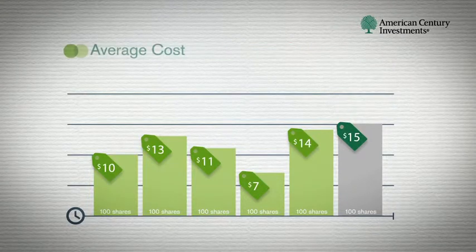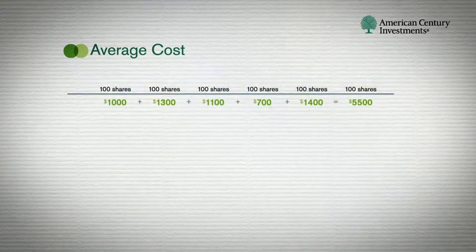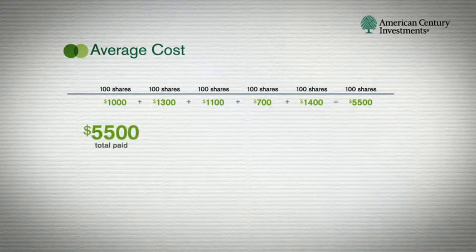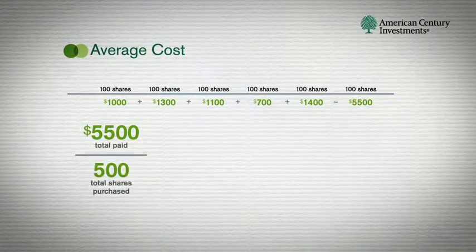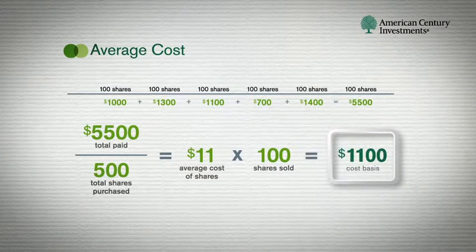The first method, average cost, is only used for mutual funds. It simply averages the cost of all of your purchases. The first step is to add the purchase amounts to find the total paid — in this case, $5,500. Then divide that by the 500 shares purchased, which works out to $11 average per share. If we're selling 100 shares, the cost for those shares would be $1,100.